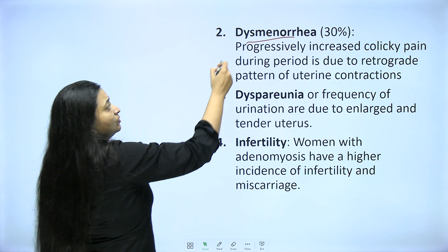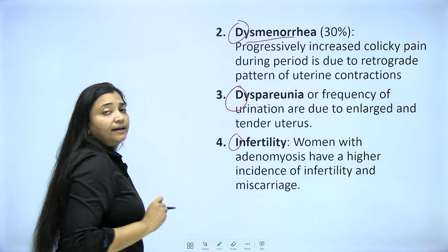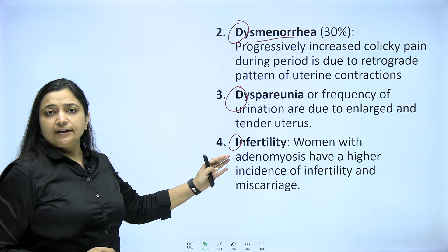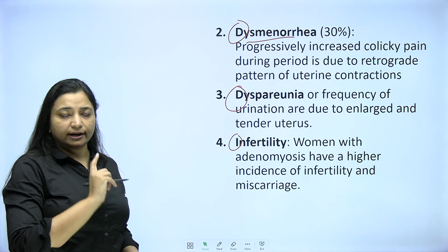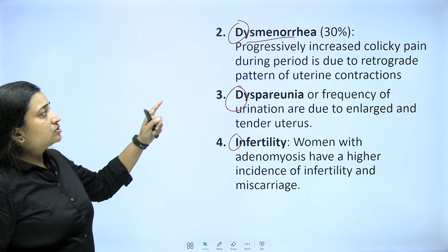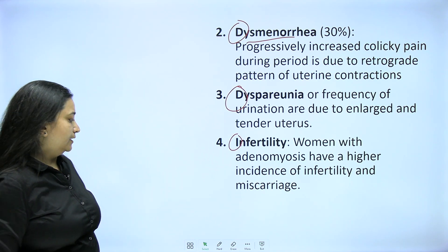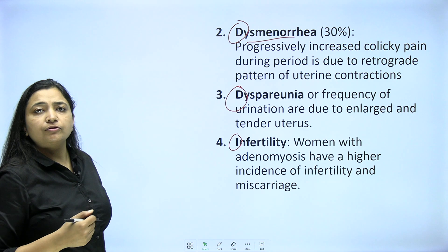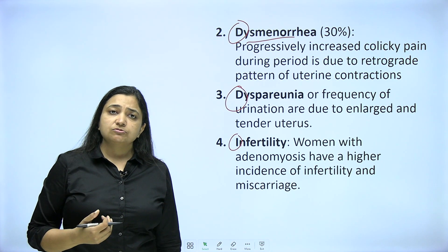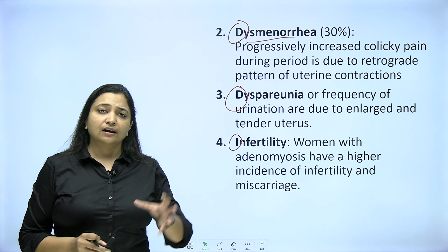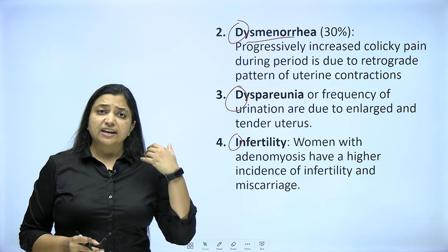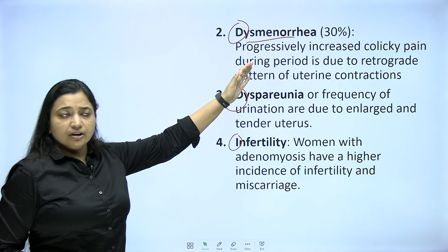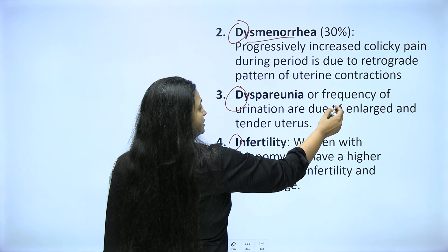DDI is the classical triad of endometriosis: dysmenorrhea, dyspareunia, infertility. But in cases of adenomyosis, menorrhagia is the main symptom. It will also have dysmenorrhea, dyspareunia, and infertility. Progressively increased colic pain during periods is due to the retrograde pattern of uterine contractions. In the etiologic theories for endometriosis or adenomyosis, they describe irregular uterine contractions that expel blood inside the uterine cavity. After menorrhagia comes dysmenorrhea due to irregular uterine contractions, then dyspareunia and frequency of micturition.